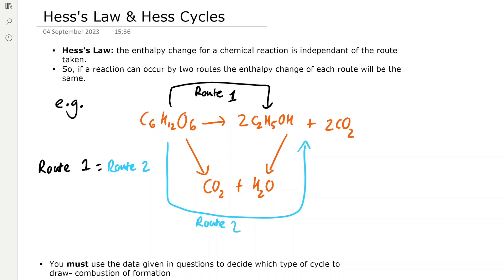Hess's law says that the enthalpy change for a chemical reaction is independent of the route taken, and this means that if a reaction can occur by two routes the enthalpy change of each route will be the same. For example, in respiration glucose goes to ethanol and carbon dioxide, and this reaction can occur by the normal route and another route which is the combustion route. You can see in this diagram that route 1 is equal to route 2 — this is essentially what Hess's law means.